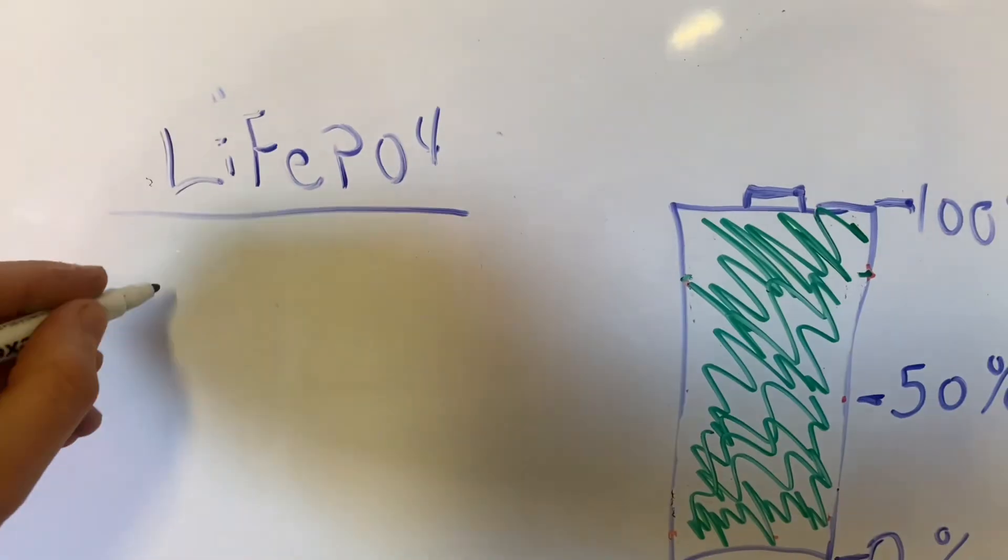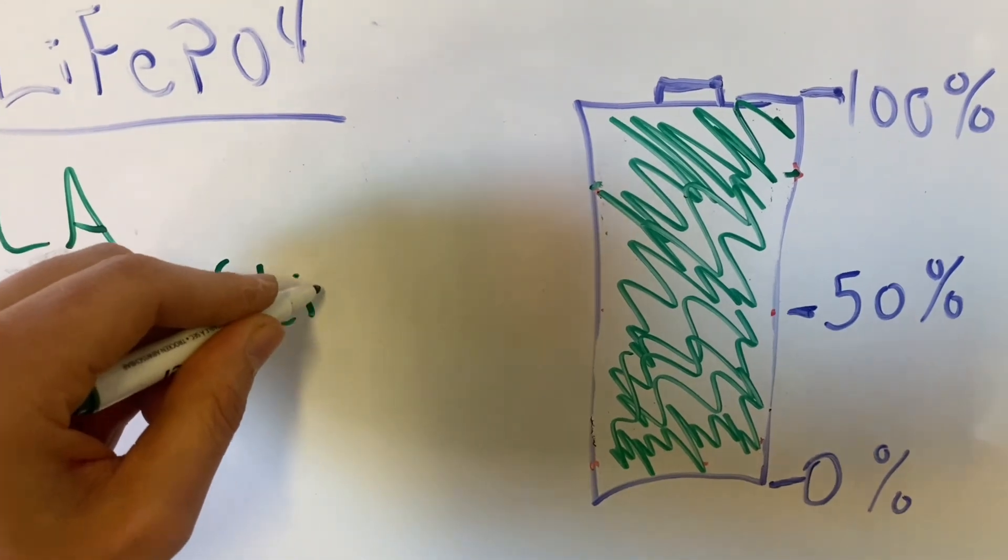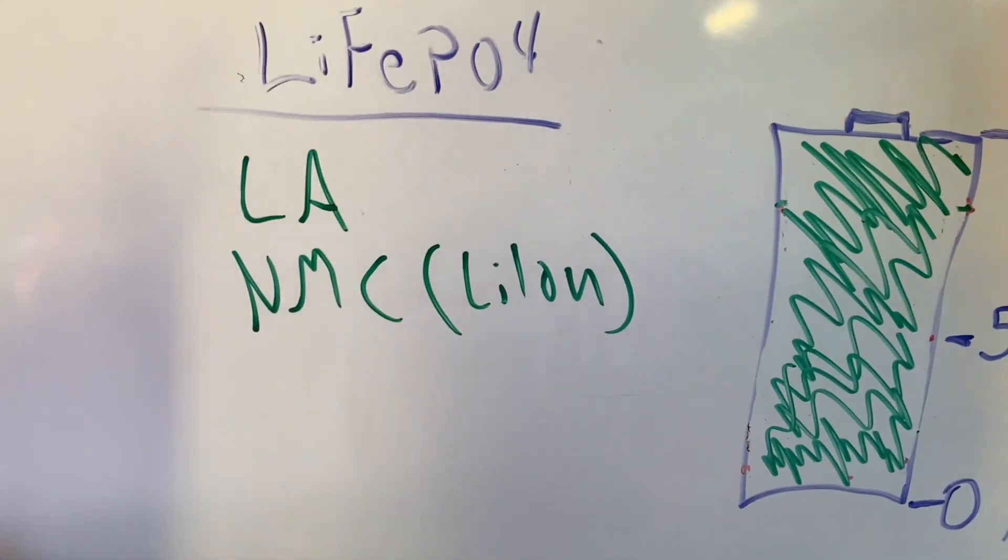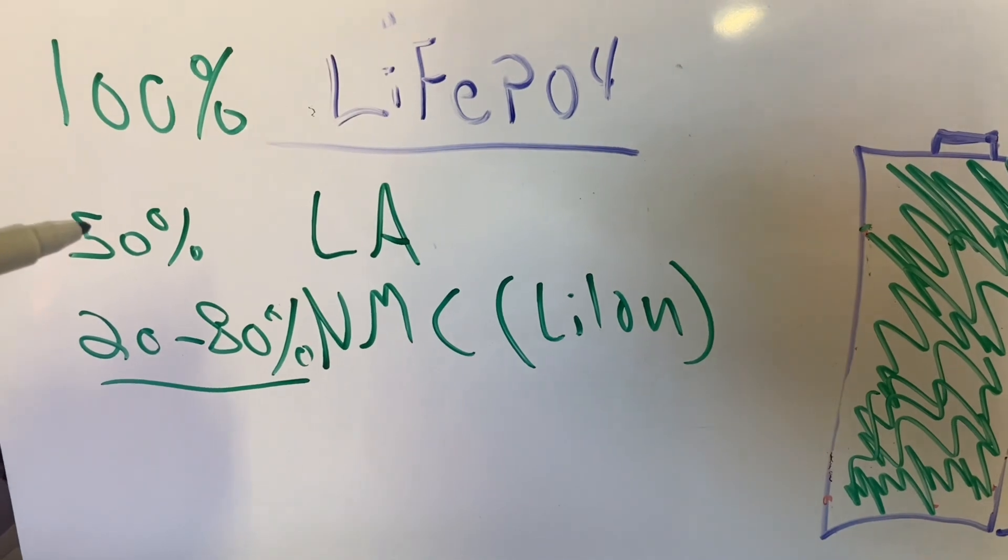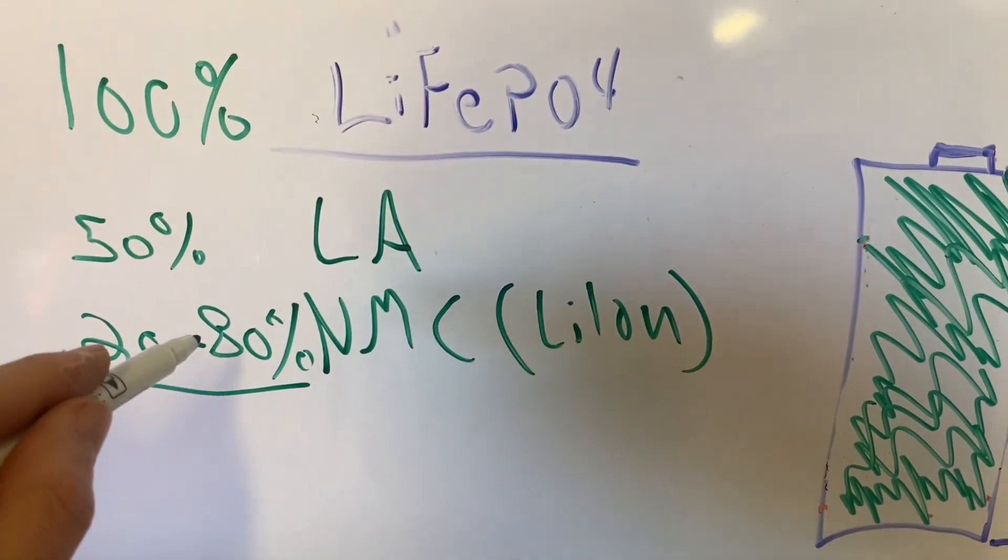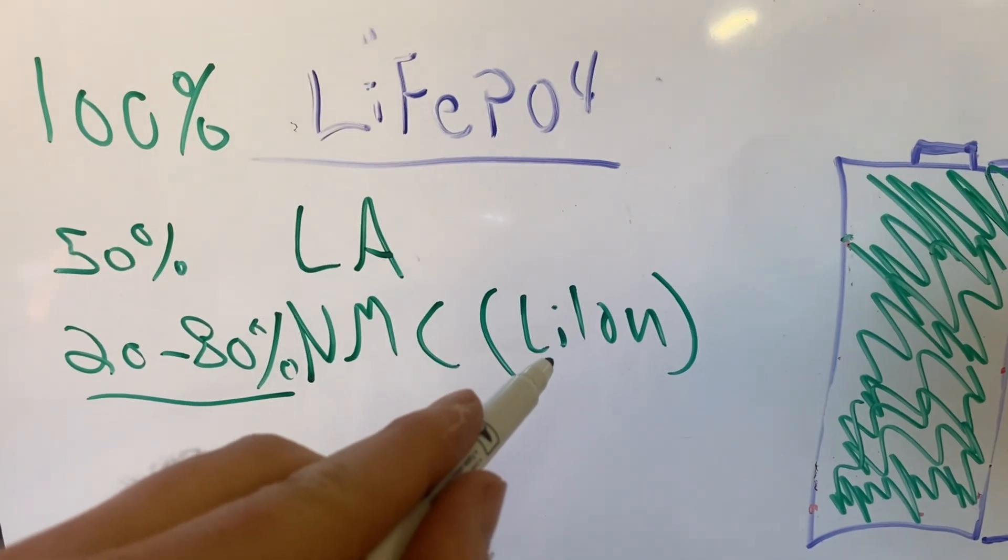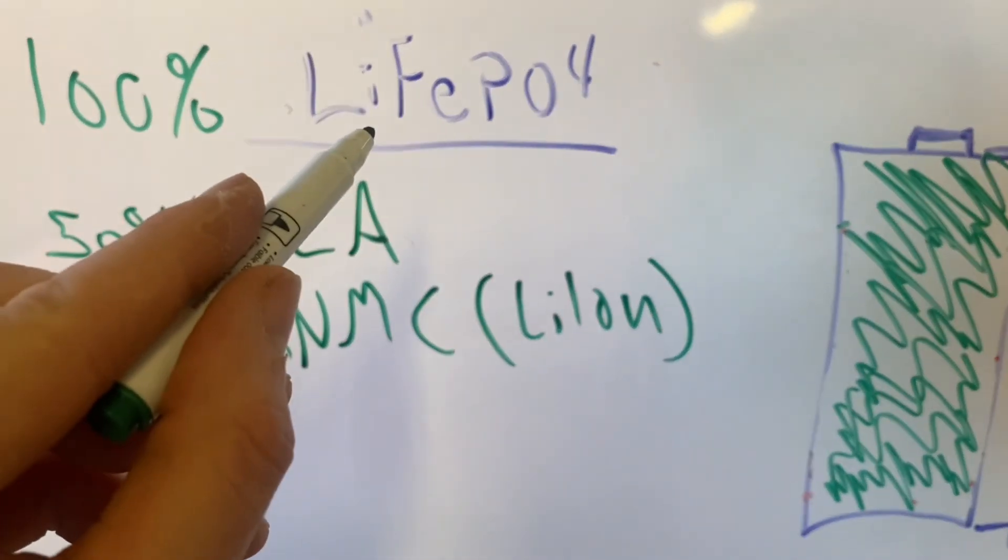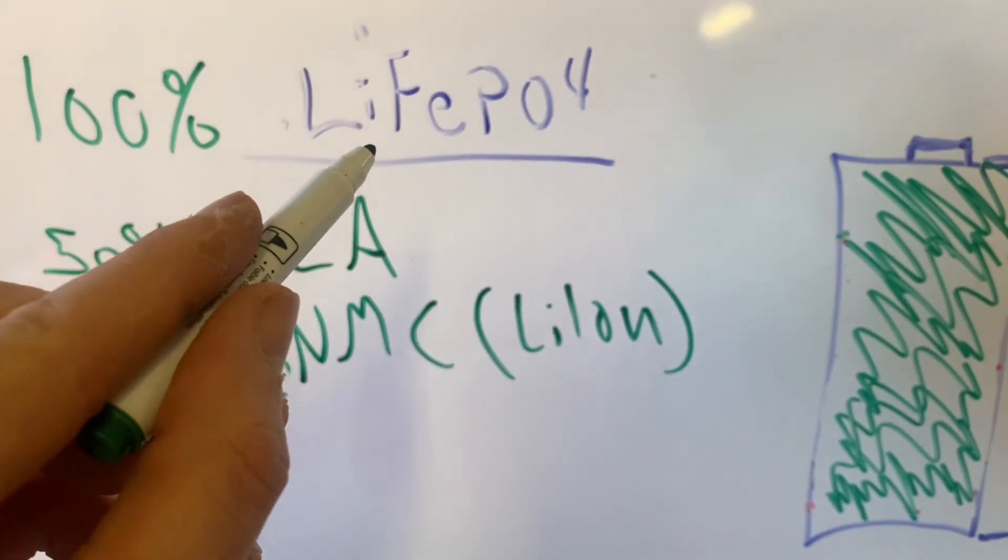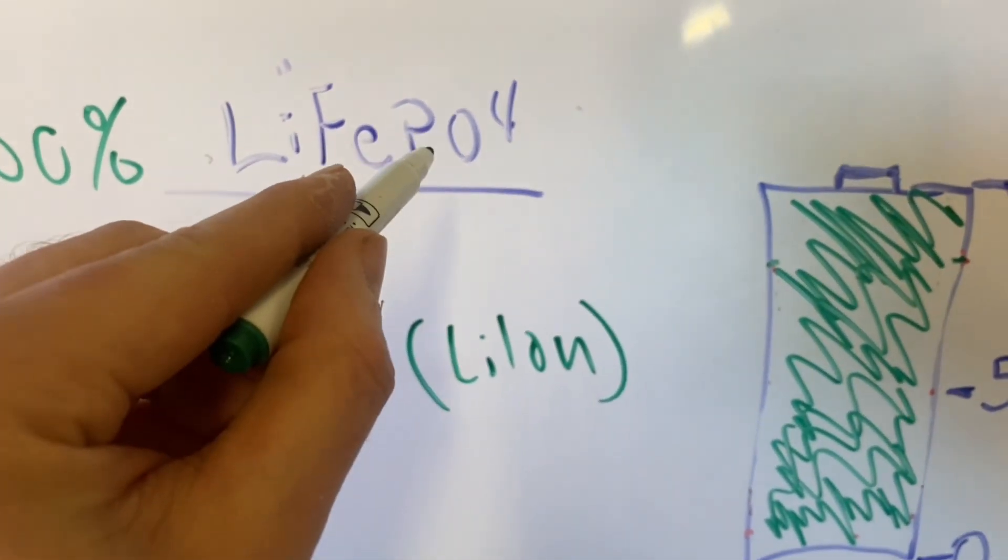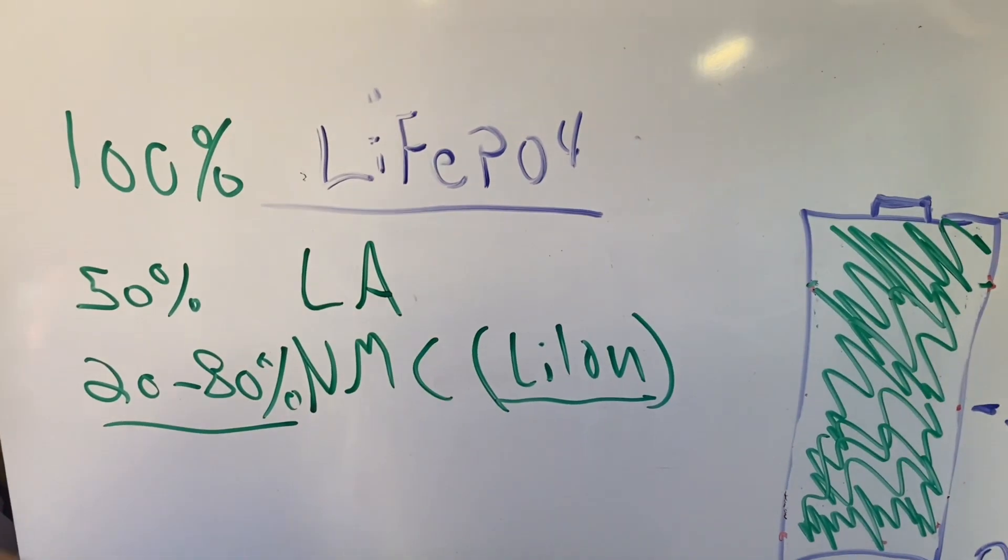So to recap: lead acid, NMC, often referred to as Li-Ion, and lithium iron phosphate. You can use 100 percent of a lithium iron phosphate battery, 50 percent of a lead acid battery, stay between 20 and 80 percent in an NMC chemistry battery, also referred to as Li-Ion. However lithium iron phosphate is also a lithium ion chemistry, so technically it falls in under the same category, but it seems to be a common misconception.